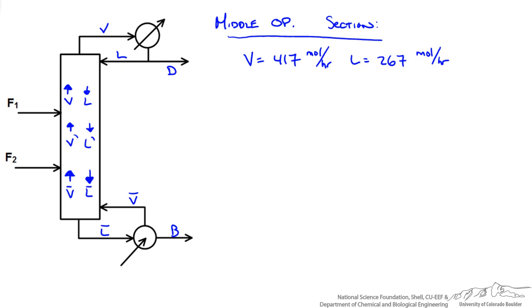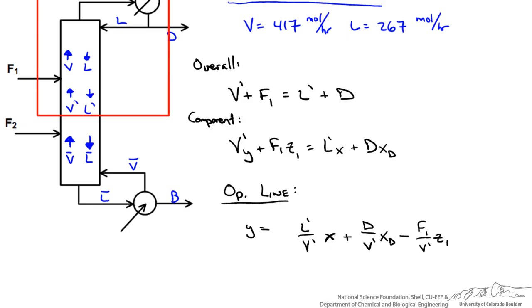If we repeat the same kind of methodology for our middle operating section, we can use the top and plot something that goes through our middle section. When we write out the material balances for this we can rearrange into our familiar operating line equation where the slope of the line will be L prime over V prime. The rest of this here will be our Y intercept.